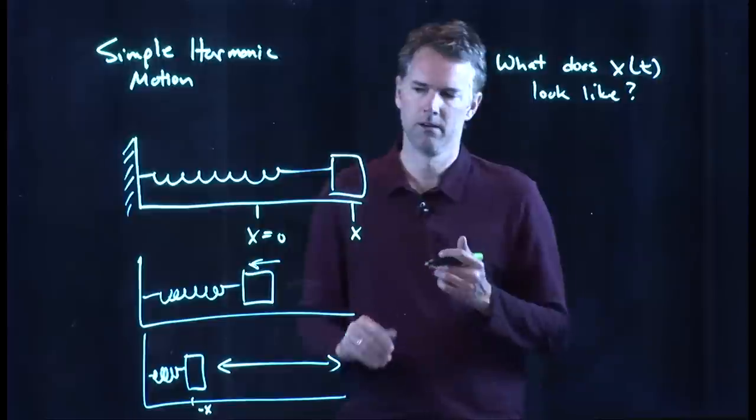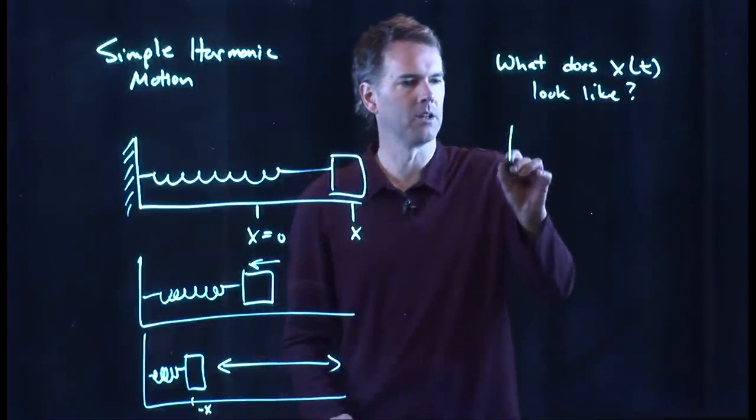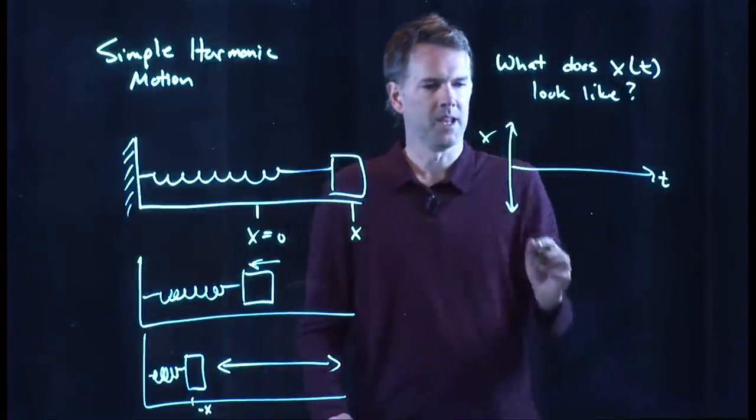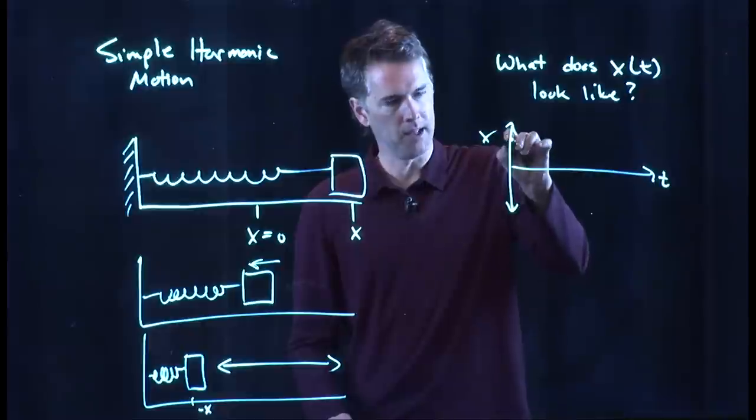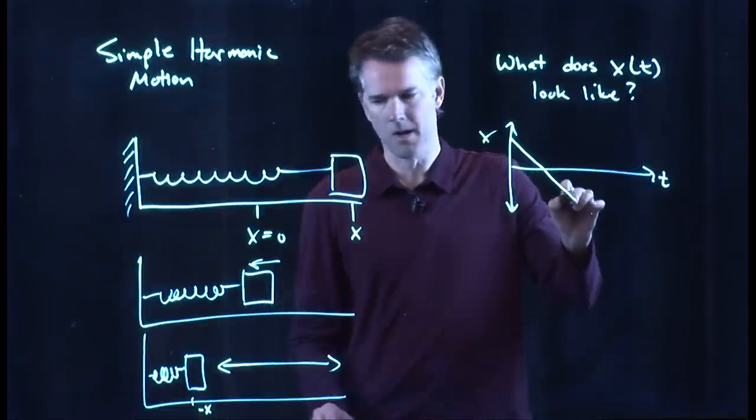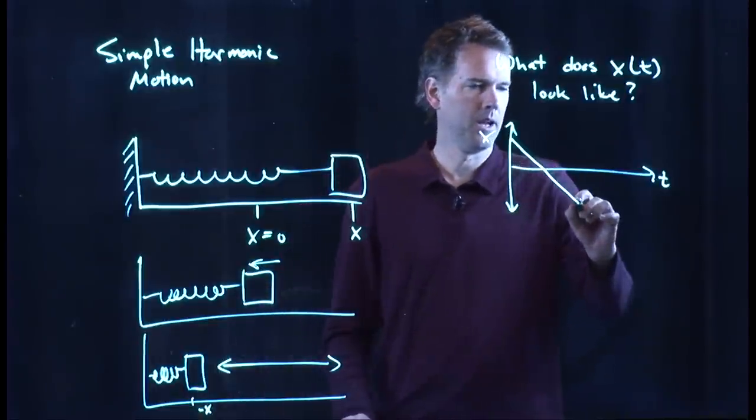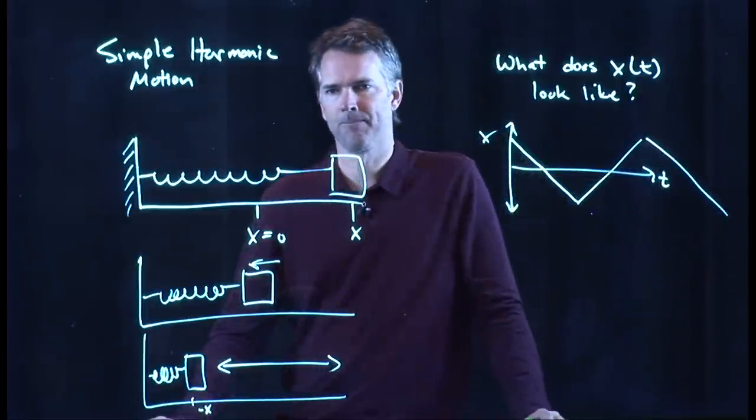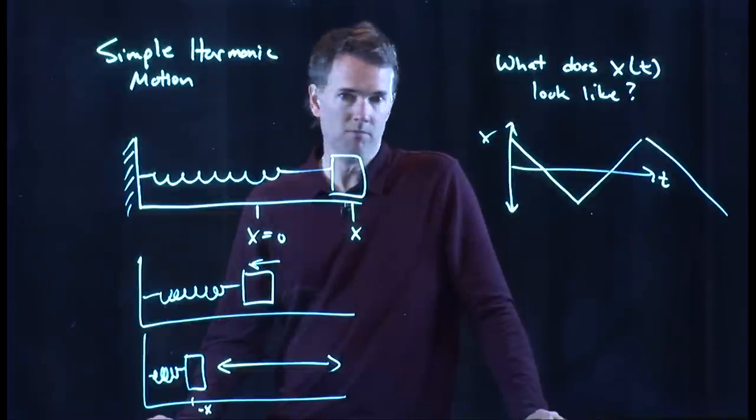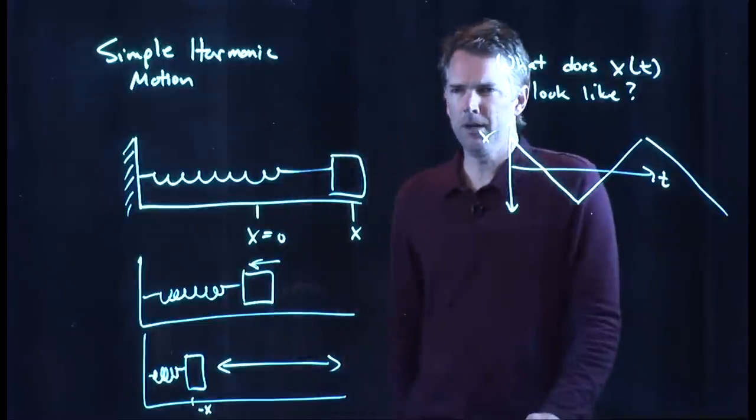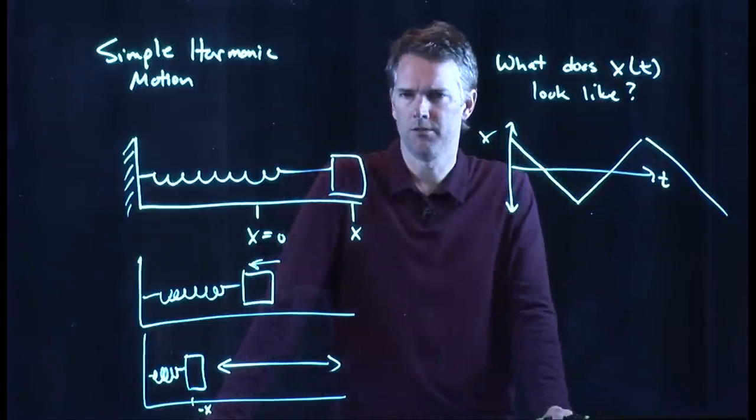And so you might think this is going to look like this. It started up here at some amplitude. It moved to the left, which means x was going down. It went through x equals zero. And then it went to some negative amplitude. And then it goes the other way. And it just does that over and over again. That is a possible solution to this problem. But it looks a little funny. Does anybody not like the graph that I just drew?